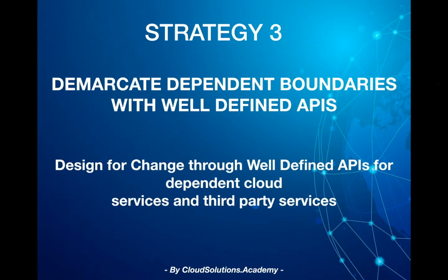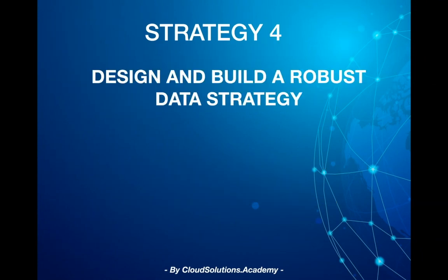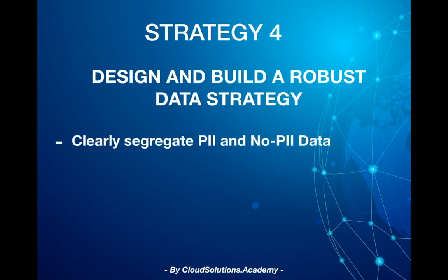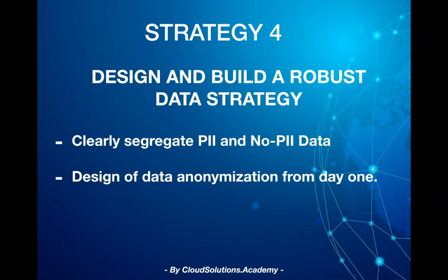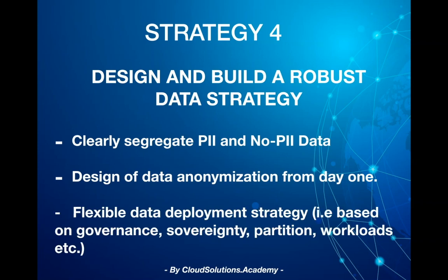The next strategy is to design and build a robust data strategy. As part of this strategy, you should clearly segregate personal identifiable information (PII) and non-personal identifiable information. You should also design for data anonymization from day one. Data anonymization implies protecting private or sensitive data by encrypting identifiers, ensuring personal data cannot be identified. This provides a flexible data deployment strategy where you can deploy non-PII data on virtually any environment, while PII data can run on-premises or in any compatible cloud region based on governance and sovereignty requirements. For reporting or analytics workloads, since the data is already anonymized, those workloads can run on virtually any cloud.